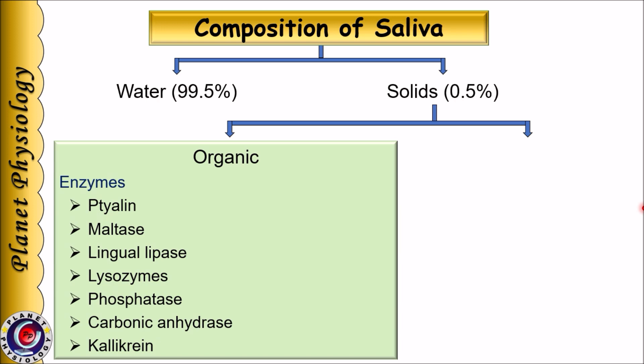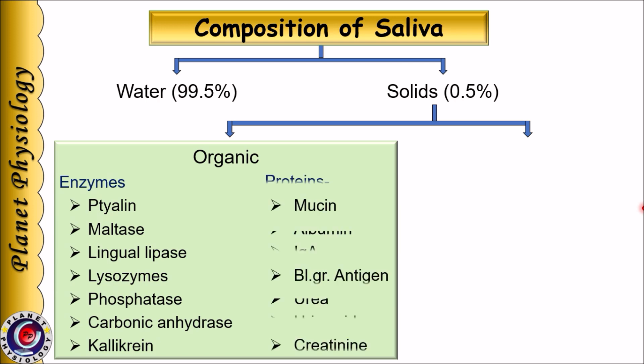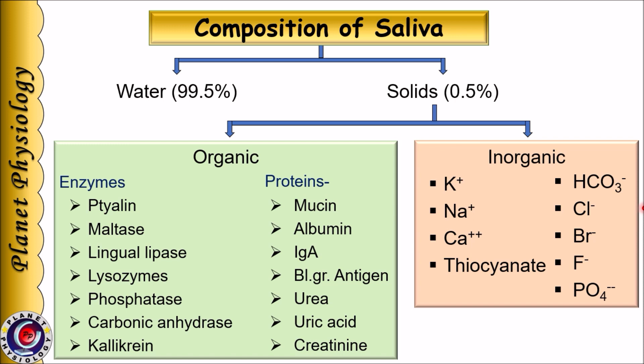carbonic anhydrase, and kallikrein. It also contains mucin, albumin, IgA which is the secretory antibody, blood group antigens in the case of secretors, and urea, uric acid, and creatinine which are excretory products. The predominant inorganic constituents include potassium and bicarbonate ions, but also small quantities of sodium, calcium, thiocyanate, chloride, fluoride, and phosphate ions.